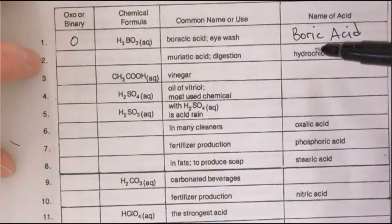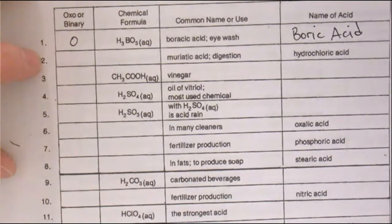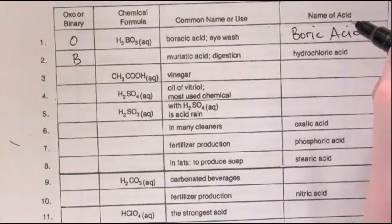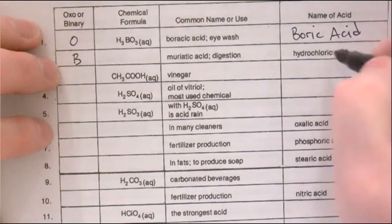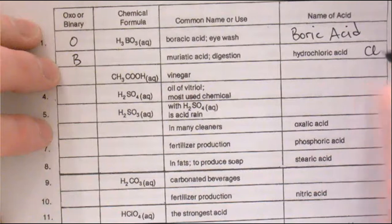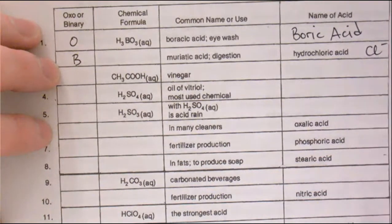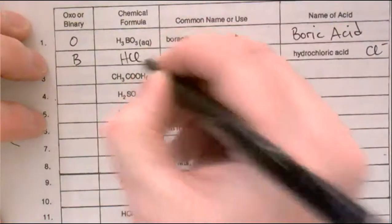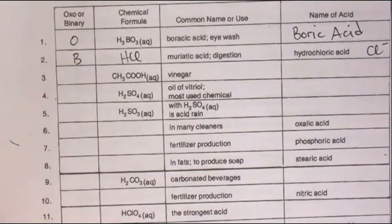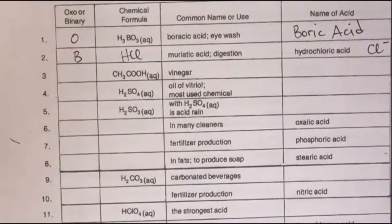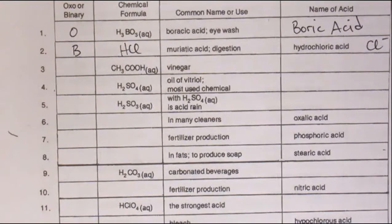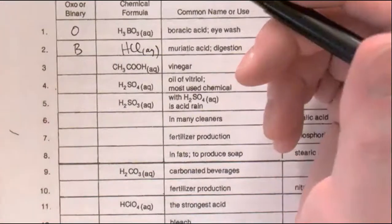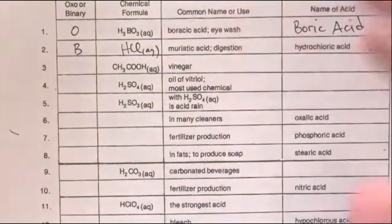Number two: the name is hydrochloric acid. Seeing 'hydro' at the beginning tells me this must be a binary acid, meaning hydrogen attached to a simple ion. Chlorine is a halogen, so it's Cl minus one — it gets one hydrogen to cancel that charge, giving HCl. On these worksheets, if it's HCl with a G for gas, you should technically call it hydrogen chloride gas. If it has AQ beside it, you call it hydrochloric acid. I won't make that distinction on my own tests.